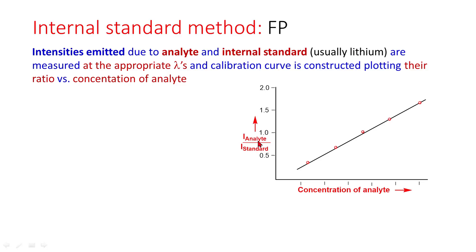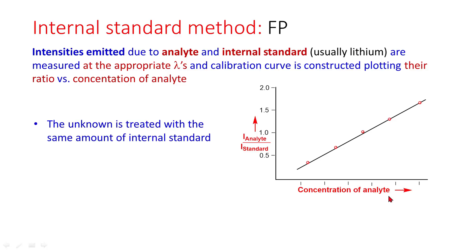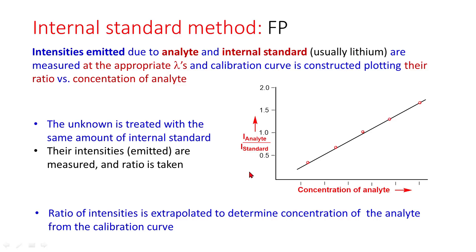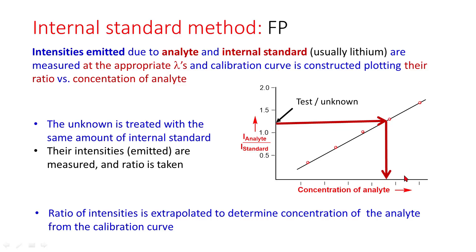Ratio of intensity due to analyte to the intensity due to standard is plotted versus concentration of analyte. The unknown is treated with the same amount of internal standard, and their intensities emitted are measured and the ratio taken. The ratio of intensities is extrapolated to determine concentration of analyte from the calibration curve. This is the ratio of intensities for the test sample; it is extrapolated and this is the concentration of unknown.